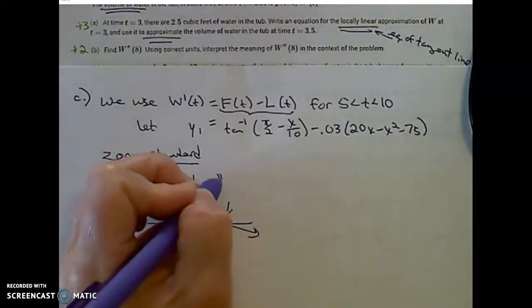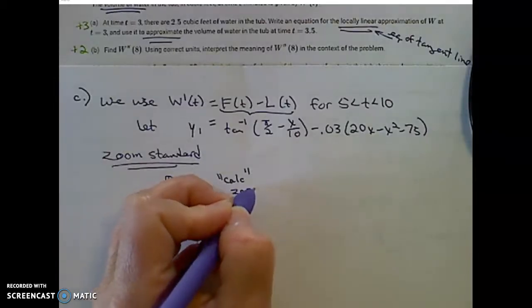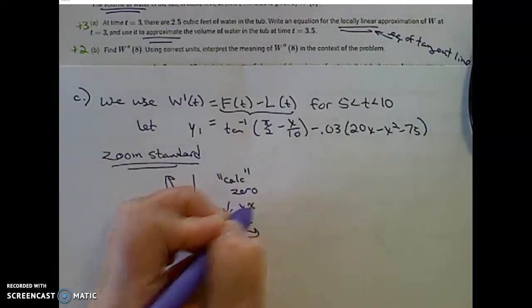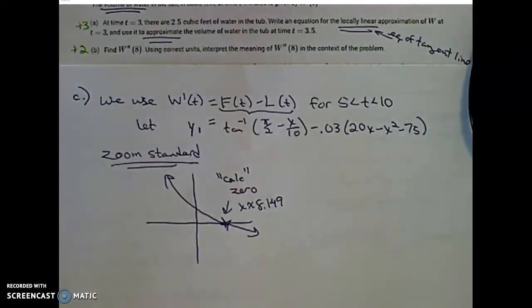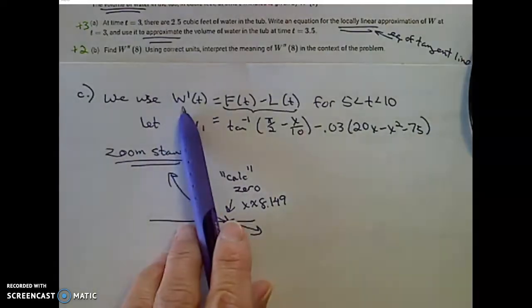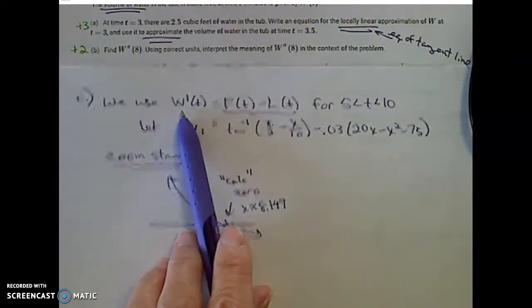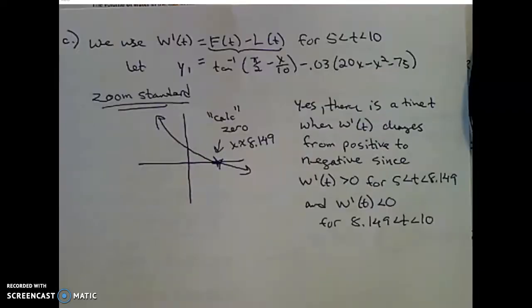I was curious, so I did calculate that zero. And I found that that zero occurs at approximately, I had to round 8.149. So you can tell by looking at the graph that yes, there is a place on that time frame between 5 and 10, where the rate of change of volume changes from a positive to a negative.